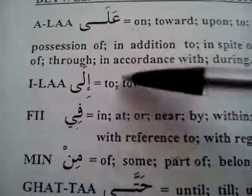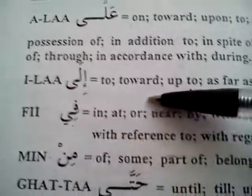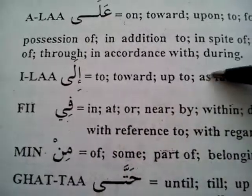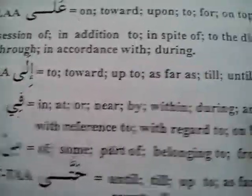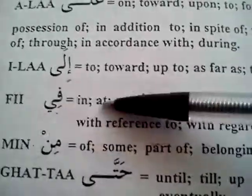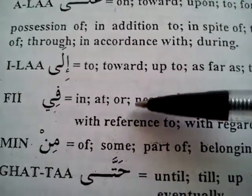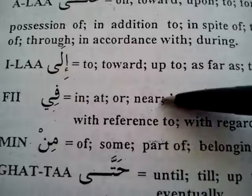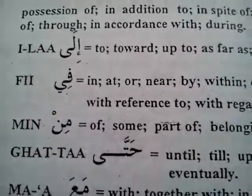You will have 'ila', meaning towards, upon, to, as far as, till, until. Then 'fi' will mean in, at, depending on the structure of the sense, or near. And 'min' will be of.